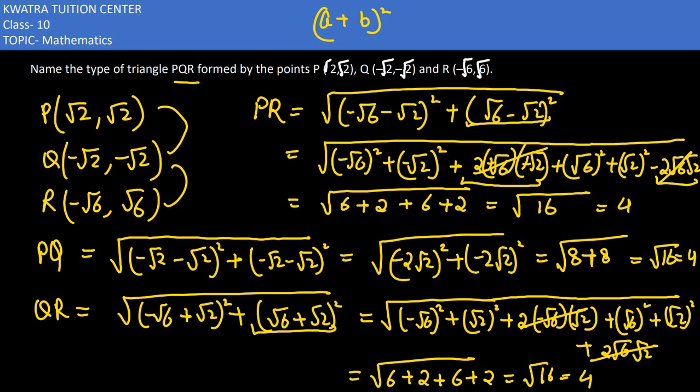So in all three cases we get 4 units. That means it would be an equilateral triangle, because we know that if all sides are equal, it is an equilateral triangle.